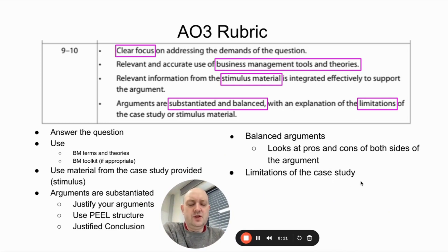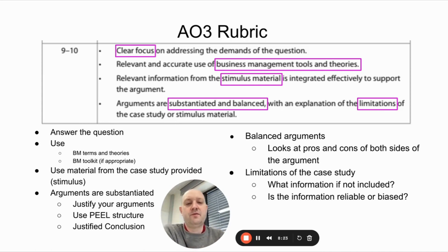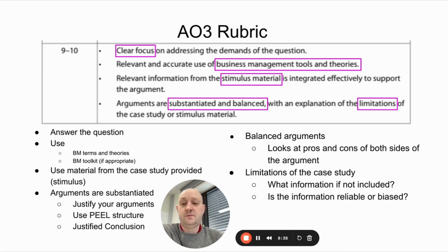One requirement that appears new for the new exams is addressing limitations of the case study or stimulus material — effectively, what are the weaknesses of the information provided? There are two things to consider: what information is not included, and whether the information is reliable or biased. For example, if data has been provided by the company itself, it could be biased. This can be addressed in the conclusion.